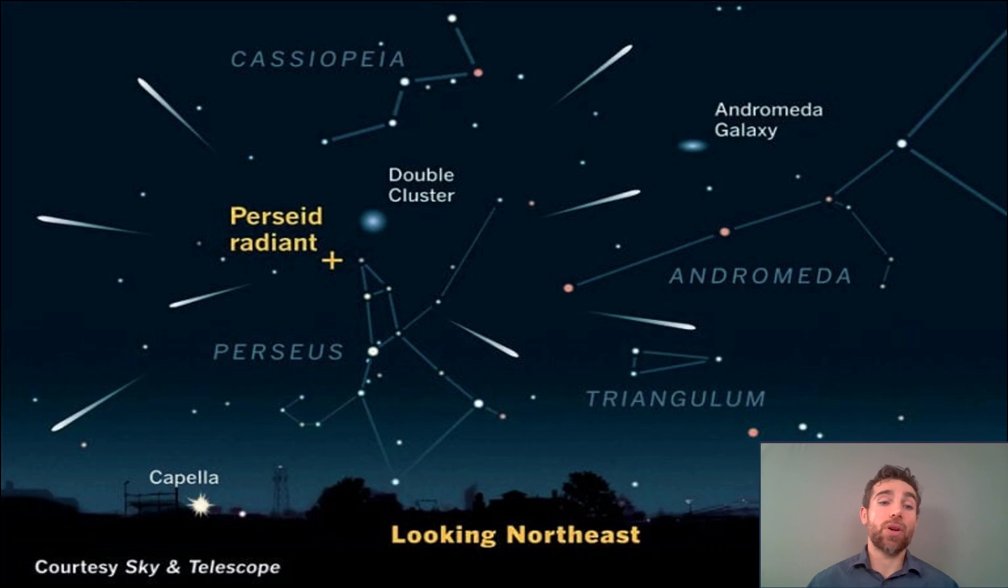You've also got the Perseids, and this is from the constellation of Perseus. Again, same point, they radiate from some point in that constellation. So if you can find the constellation, then you've got a good chance of being able to see some meteors if you know when it actually occurs.